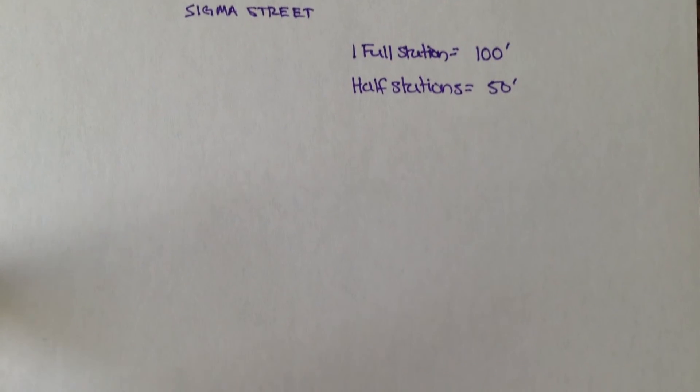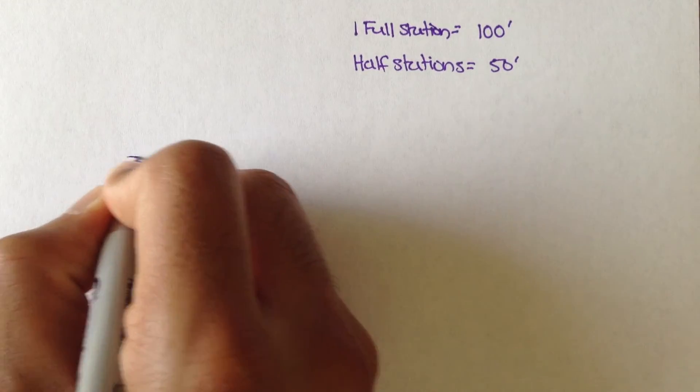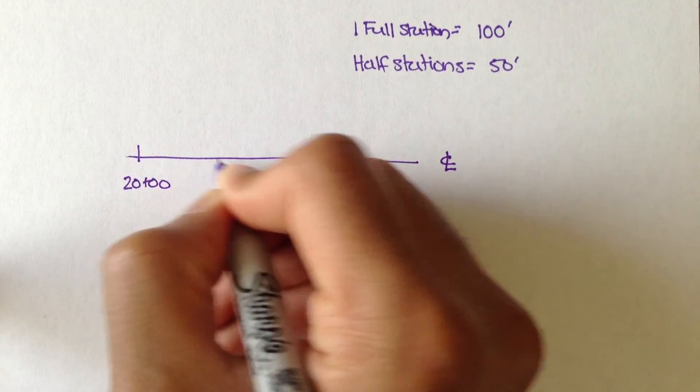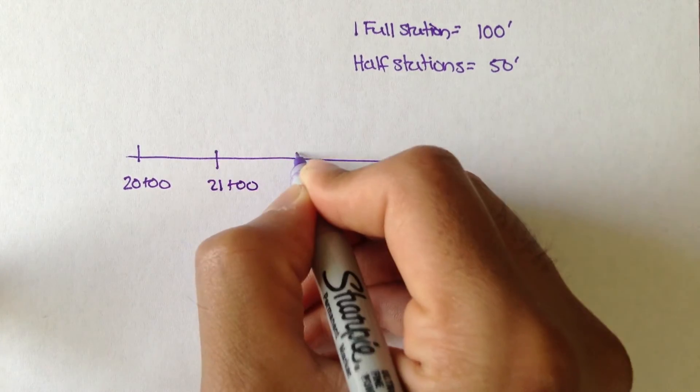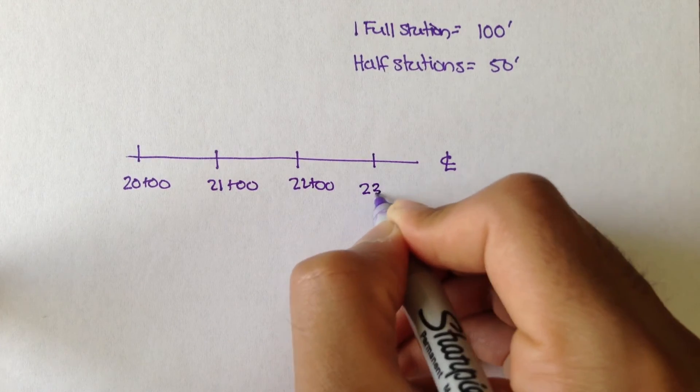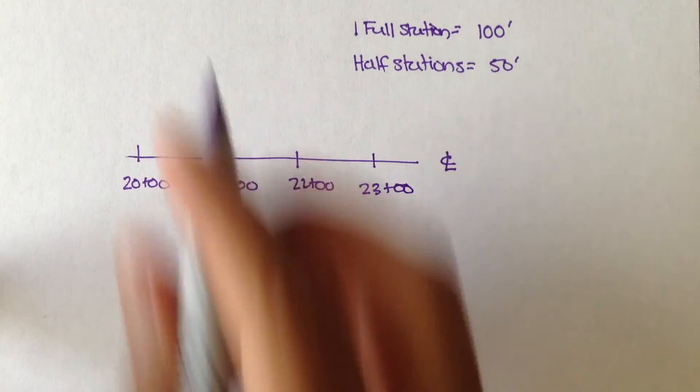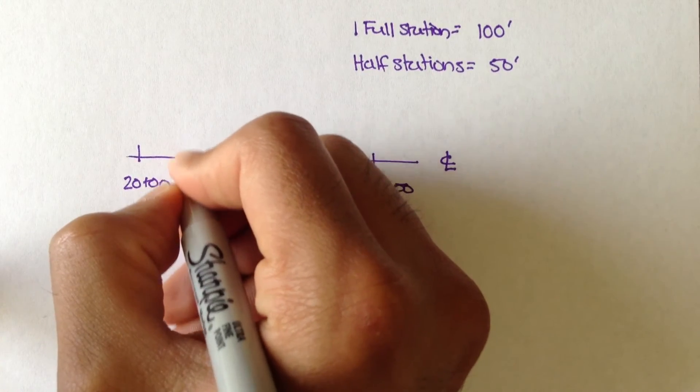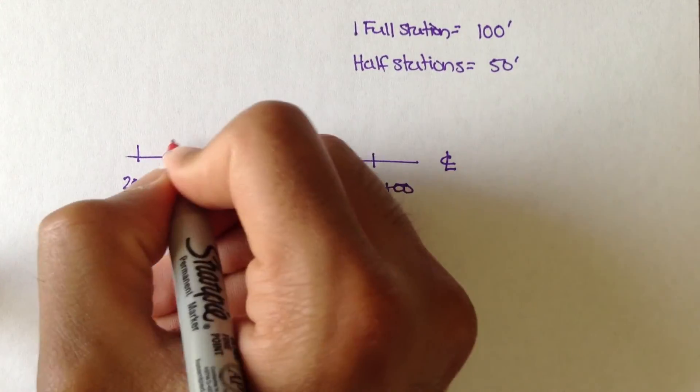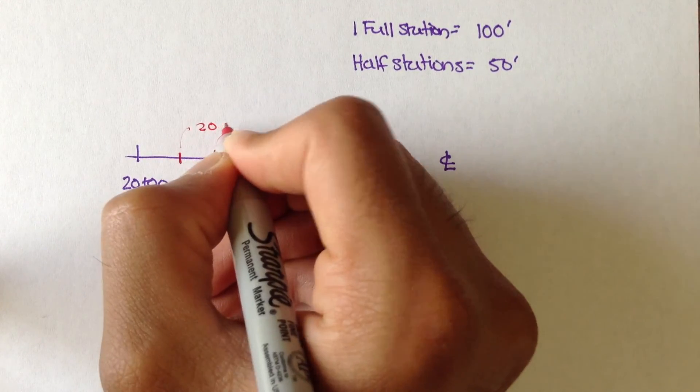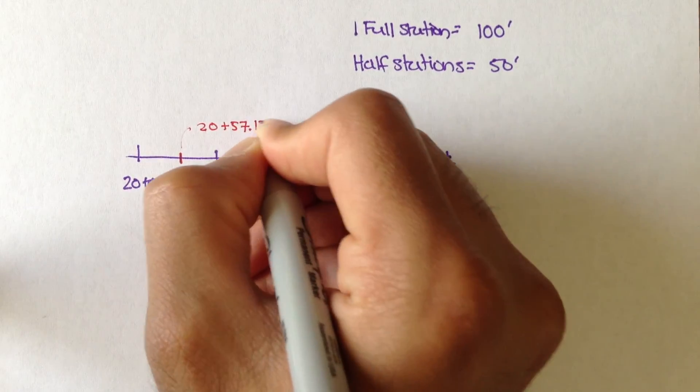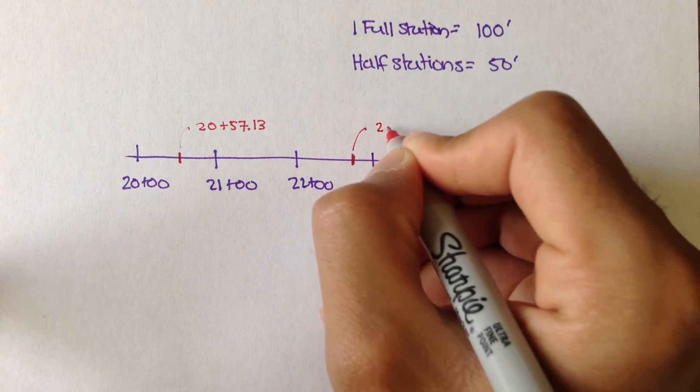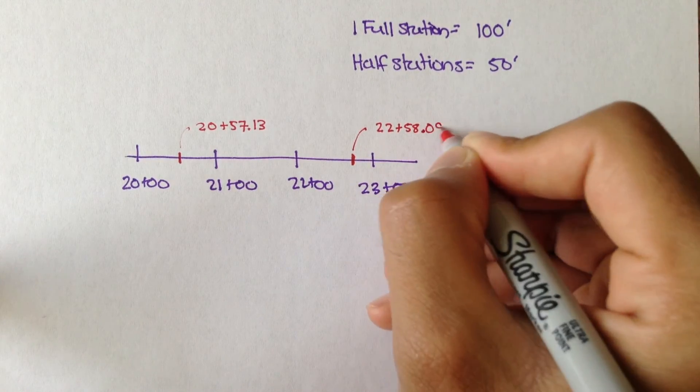So let's do a really quick example using stationing. Let's say this was our center line. And we had stations 20 plus 00, we had station 21 plus 00, we had station 22 plus 00, and we had station 23 plus 00. Let's say we measured out, let me do this in a different color, let's do this in red. Let's say somewhere here we had station, we measured out and it was station 20 plus 57.13. And somewhere over here we measured out this station to be 22 plus 58.09.